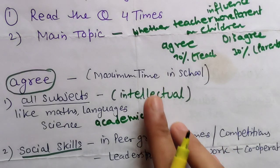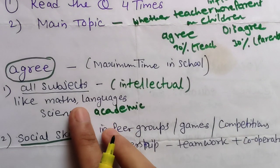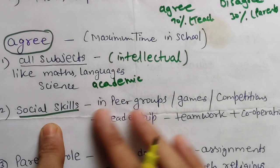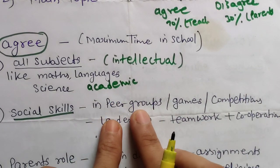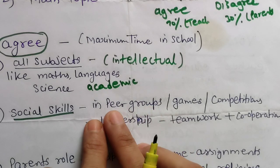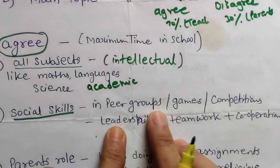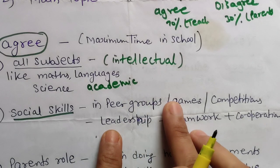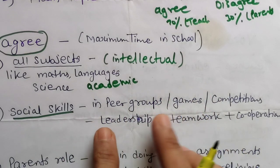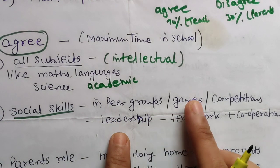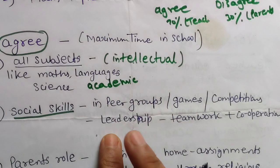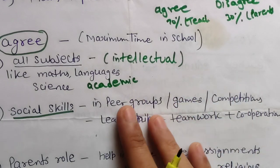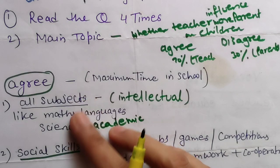Children are spending maximum time at school, so teachers are able to teach these subjects. For social skills, when children are sitting in class or playing outside with their peer groups and classmates, teachers are grouping them and assigning joint activities. While doing these activities — competitions, puzzles, quizzes — children learn leadership qualities, teamwork, cooperation, and coordination.